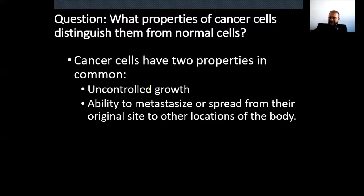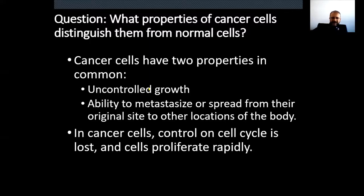In cancer cells, control on the cell cycle is lost and cells proliferate rapidly. The important thing with cancer cells is the loss of control on the cell cycle. Cancers are diseases caused by loss of control on the cell cycle.